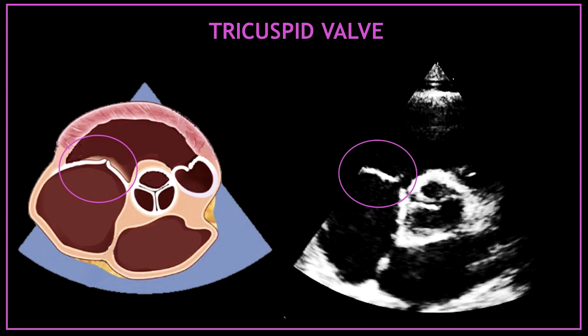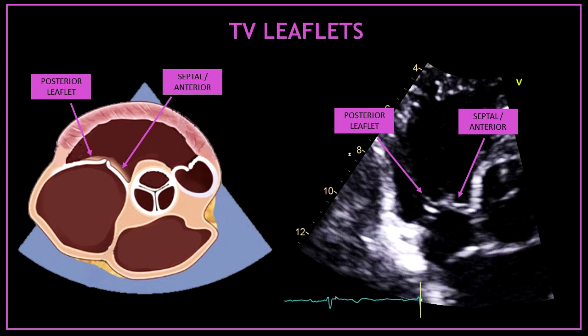On the left hand side, dividing two chambers, the first valve we can visualize is the tricuspid valve. In this view, and depending on the cut, we can differentiate the tricuspid valve leaflets. The leaflet located on your left hand side is always going to be the posterior leaflet. However, on your right hand side that leaflet would be the septal leaflet or the anterior leaflet depending on the cut.